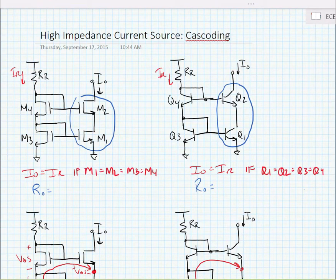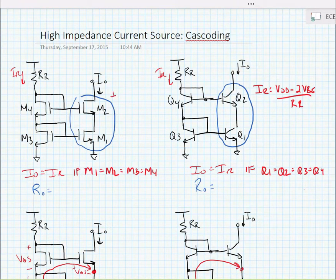Of course we can write an expression for the reference current as well. IR is equal to VDD minus 2VBE divided by RR, or for the MOS device, IR is equal to VDD minus 2VGS divided by RR.